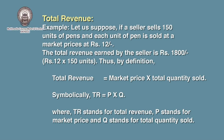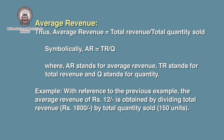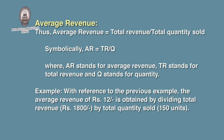Average revenue is defined as the average value of total revenue with respect to the number of units sold. Average revenue can be obtained by dividing total revenue by the number of units sold. Thus, average revenue = total revenue divided by total quantity sold. Symbolically, AR = TR / Q, where AR stands for average revenue, TR stands for total revenue, and Q stands for quantity. With reference to our previous example, the average revenue of rupees 12 can be obtained by dividing total revenue — rupees 1800 — by total quantity sold — 150 units.